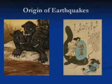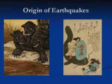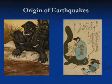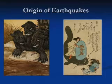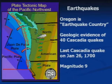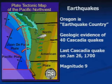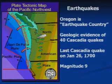For centuries in the past, the origin of earthquakes remained a real mystery. The Japanese, for example, thought that giant catfish lived under the earth, and when they moved, they would create earthquakes. In the late 60s, we learned a lot more about the origin of earthquakes and their relationship to plate tectonics.